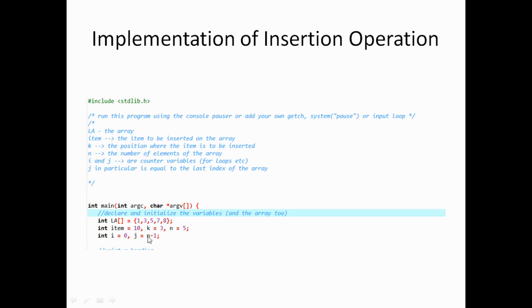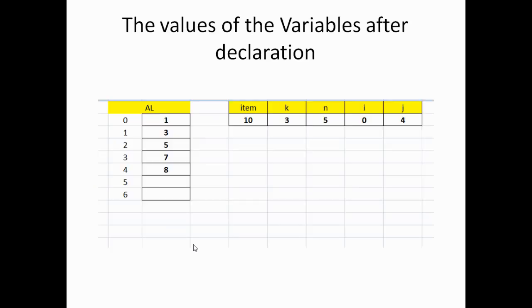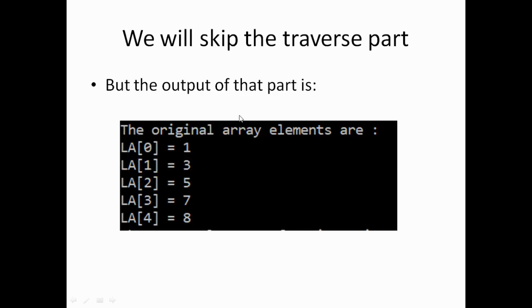That's why we have J equal to N minus 1. Here are the initial values. The array has the following elements: 1, 3, 5, 7, and 8, with their corresponding indices. Item is 10, K is 3 (the position), and N represents the number of elements — we have 5 elements. I is the position of our first index and J (which is 4) is our last index. We skip the traverse part and go directly to the insertion operation.